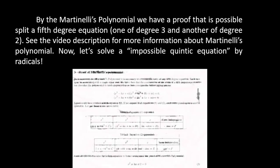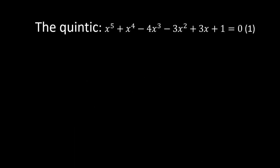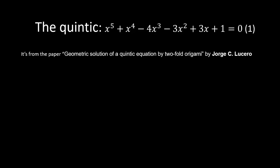This is the paper about the proof of Martinelli's polynomial. The quintic x to the power 5 plus x to the power 4 minus 4x to the power 3, etc., is soluble by radicals. It's from the paper 'Geometric Solution of a Quintic Equation by Two-Fold Origami' by George C. Lucero.